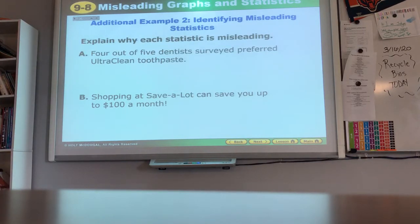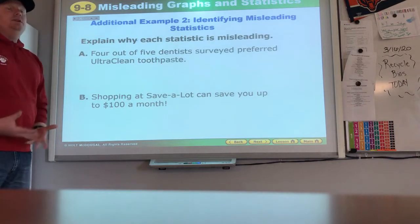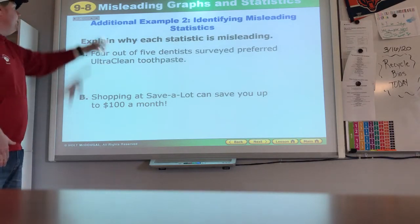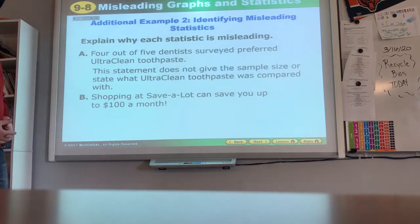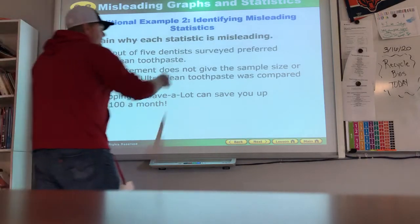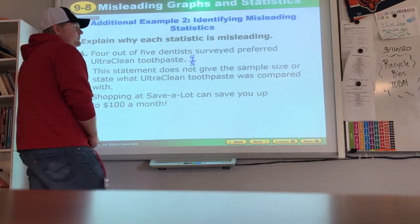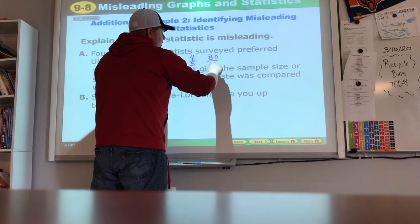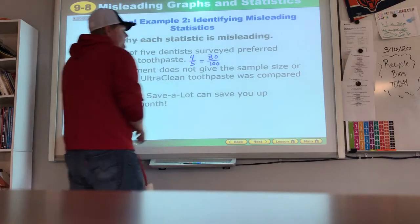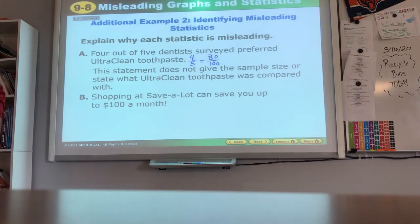Explain why each statistic is misleading. Four out of five dentists surveyed preferred Ultra Clean toothpaste. Let's let them explain their reasoning and we'll see if we can pick it up here in a bit. This statement does not give the sample size or state that Ultra Clean toothpaste was what it was compared with. So four out of five sounds very good but what about 80 out of 100? Those are equal. Seems like you have a lot more people disagreeing that Ultra is not the best.